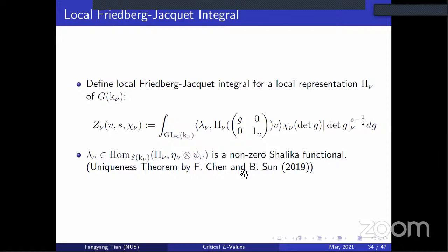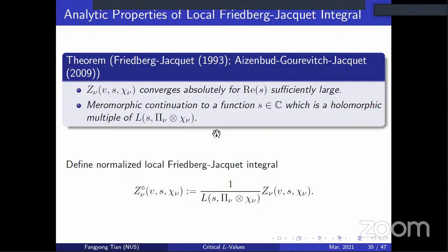Due to a theorem of Foulling, Chen, and Bingyin Sun on the uniqueness of the Shalika functional, we analyze the local integral piece by piece: archimedean local integral and non-archimedean local integral. The key analytic property of the local Friedberg-Jacquet integral says that once we normalize the local Friedberg-Jacquet integral by the local L-function, it is holomorphic. This was proved by Friedberg-Jacquet in their original paper for non-archimedean places in 1993, and for archimedean places by Aizenbud, Gourevitch, and Jacquet in 2009.